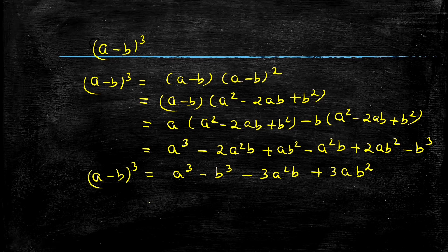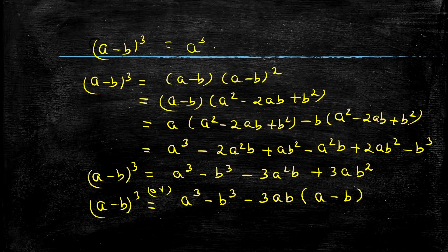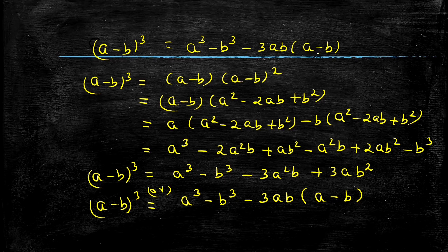We can also rewrite this identity just as we did for the previous one. If I take minus 3ab as the common term, I am left with a minus b inside. So: a minus b the whole cube equals a cube minus b cube minus 3ab into a minus b. The only difference from a plus b the whole cube is the change of signs.